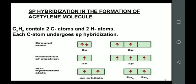In C₂H₂, we have two carbon atoms and two hydrogen atoms. Both carbon atoms in acetylene undergo sp hybridization because both carbons are making a triple bond with each other.